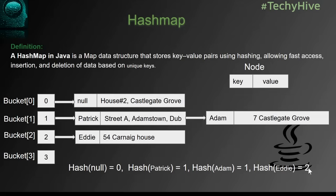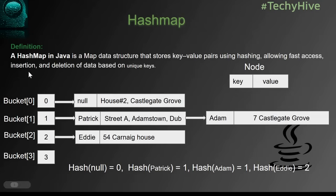For the Eddy key, it maps to hash key 2 and goes to bucket number two. We don't have any entry in bucket number three. So this is a very simple example of how a HashMap works, and now you understand how values are stored in it.